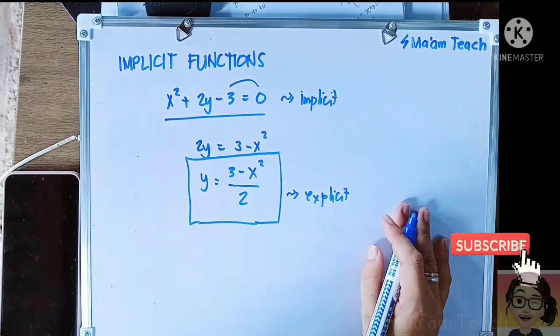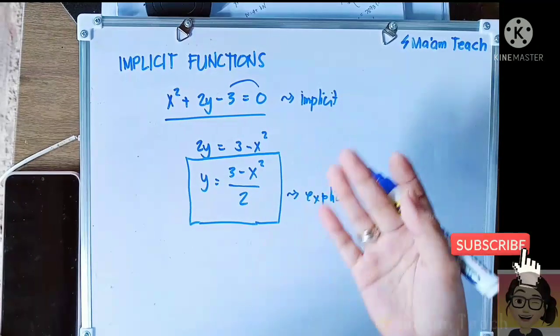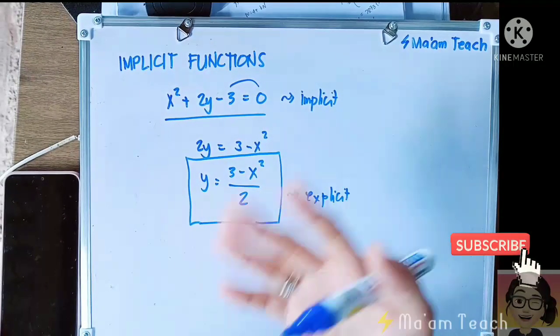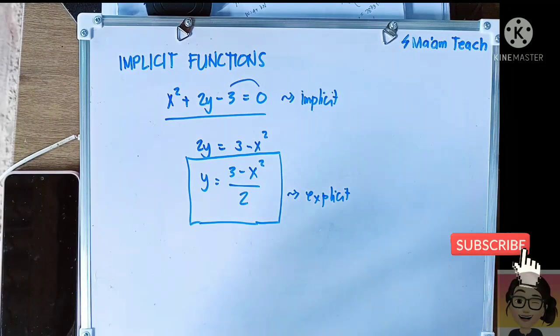But those functions that are clearly stated is what we call explicit. Can you know the difference between the two? So explicit are easy to understand.